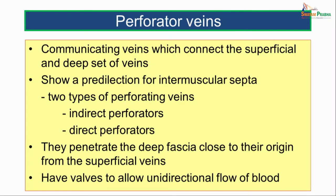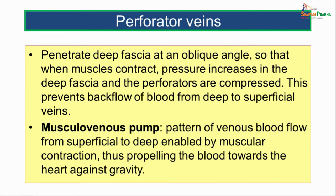Moving on to the perforator veins. These are the communicating veins which connect the superficial and the deep set of veins. They show a predilection for the intermuscular septa. There are two types of perforating veins: indirect perforators and direct perforators. They penetrate the deep fascia close to their origin from the superficial veins. They have valves which allow unidirectional flow of blood from the superficial veins to the deep veins. They penetrate the deep fascia at an oblique angle so that when the muscles contract, the pressure increases in the deep fascia and the perforators are compressed, preventing backflow of blood from the deep to the superficial veins.